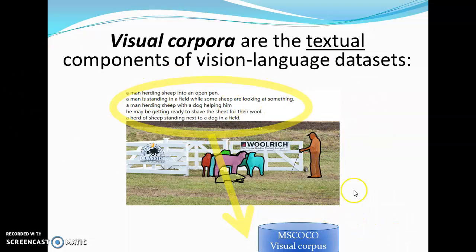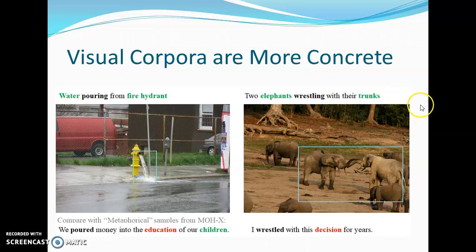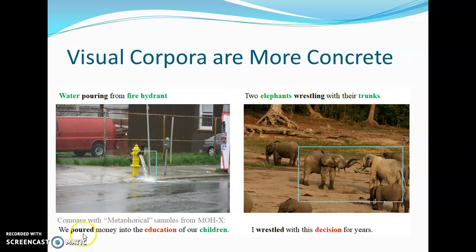This is the visual corpus for the MS-COCO, and this is the visual corpus for the Visual Genome image descriptions. We can see that image descriptions from the Visual Genome are very literal with many concrete words. And when we look at the same verb with its metaphorical meaning from the MOH dataset, we can see that in the sentence we have many abstract words that we don't usually find in visual corpora.